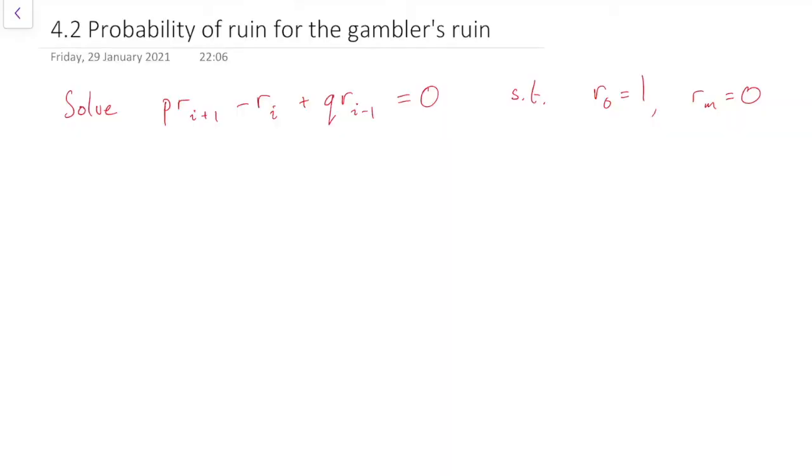So last time in the previous section, in section 3, we set up a linear difference equation for the probability of ruin, and now we're going to see how to solve that. This is the equation that we set up in section 3 for the probability of ruin, and as we can see it's a homogeneous linear difference equation, so now we just have to solve it.